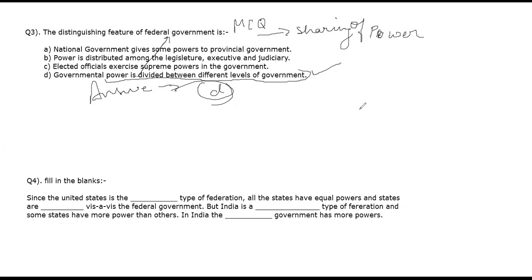We will now move on to the fourth question. It is a fill-in-the-blanks, so we have to read it carefully. The question says: since the United States is a type of government — what type of Federation is it? We have to write what type of Federation it is.